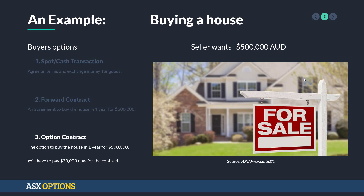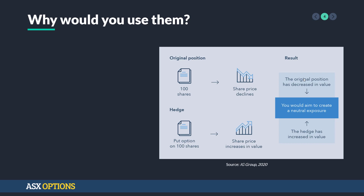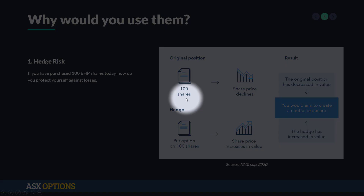So why would you want to use an option in the financial markets? Well, one of the reasons is to hedge risk. Let's say you've purchased 100 BHP shares today — how do you protect yourself against losses? If you bought stock, you want the shares to rise since you're long. You would lose money if the share price falls. So let's say you've entered 100 shares and you want to protect yourself against that price decline.